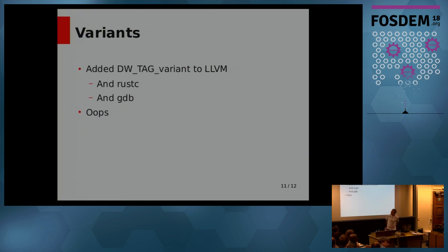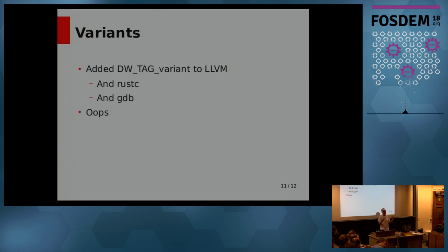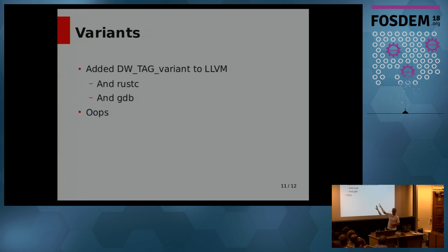So I got a review from LLVM pointing this out and I thought, well, you know, you're completely right, it's depressing. It's not the first mistake I've made. But the point is, Rust works the way it works. The expression of it in Dwarf isn't super important — whether that member is here or there, the debugger's going to cope either way, because debuggers have to know a certain amount about the language they're reading anyway.